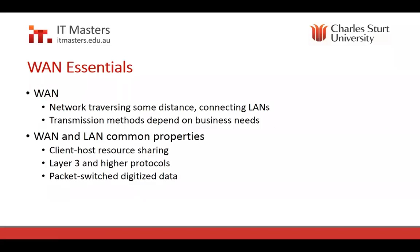A WAN or wide area network is really a network that is going to traverse some considerable distance. It connects local area networks together. So if you're a company that may have three or four offices and a head office, they could be dispersed anywhere across your state or country, and there needs to be some way of interconnecting those particular local area networks. To do that, we use WAN — wide area network — technologies.